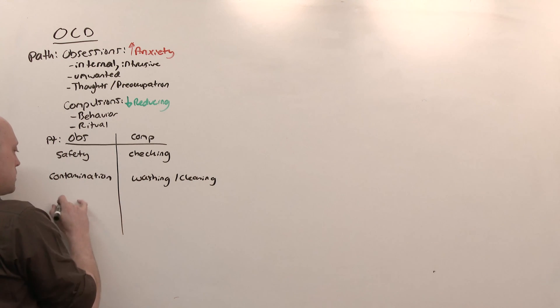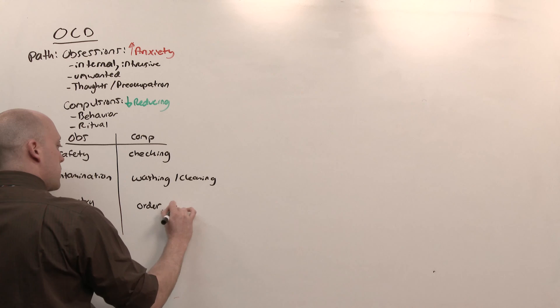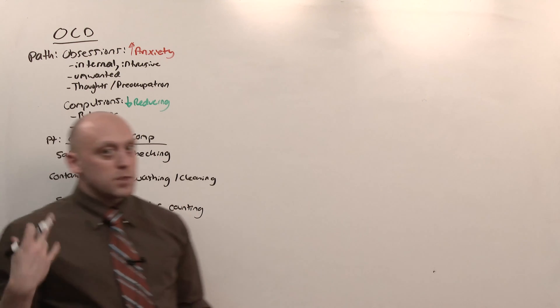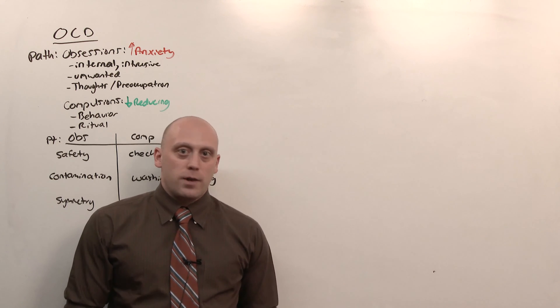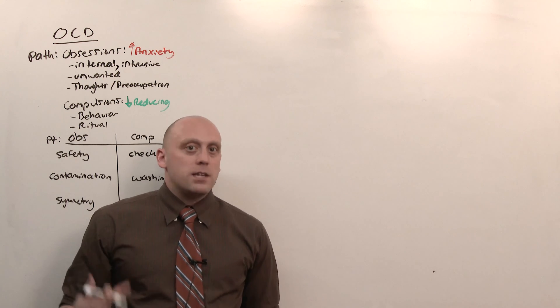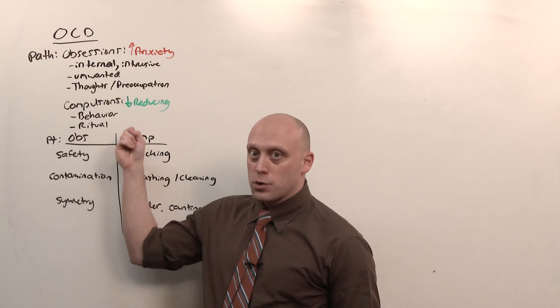Another common one is contamination, being dirty. The compulsion that is going to be washing or cleaning. The last of the common obsessions is going to be symmetry, which leads to putting things into order or counting. Now, the compulsion need not be a physical action. It could simply be a mental ritual, multiplying by five, dividing by three from a thousand. It's repeated, repetitive motion or a common, repeated behavior or ritual.